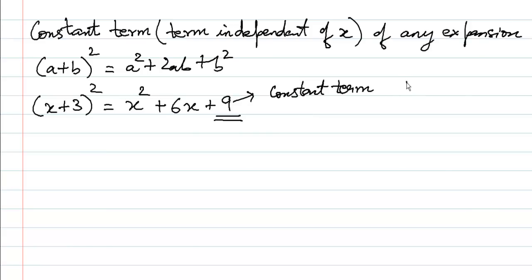The term which is independent of x has no x written in it. We can assume that 9 is nothing but 9·x⁰. So in other words, the term which is independent of x — the constant term — has its index as 0. Let us take an example to understand how to find such a term.